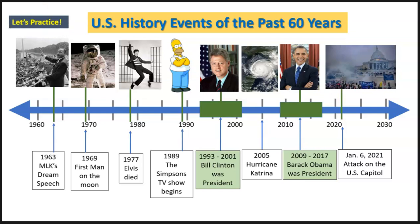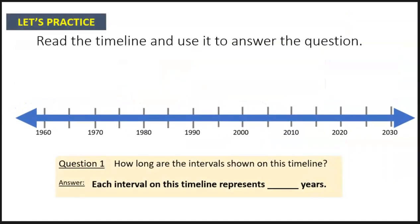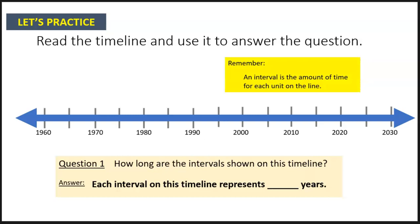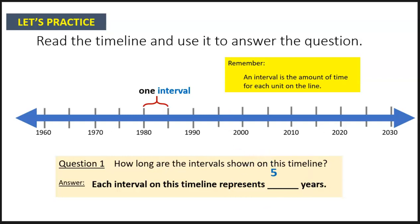Now let's practice. Let's use the timeline to answer some questions. First question: how long are the intervals shown on this timeline? Remember, an interval is the amount of time for each unit on the timeline. Here's one interval — it covers one small unit. Adding in the other dates, we can see this interval goes from 1980 to 1985. So how long is that interval? Each interval on this timeline represents five years.